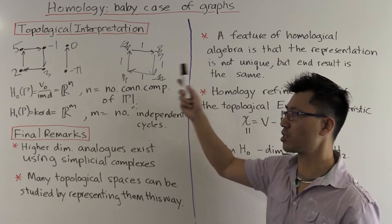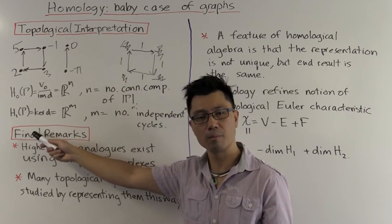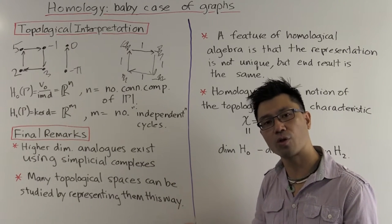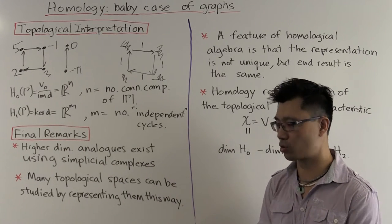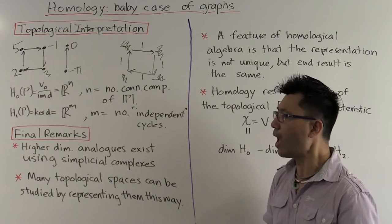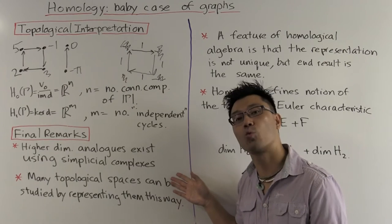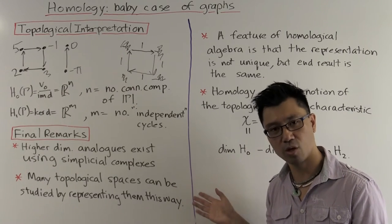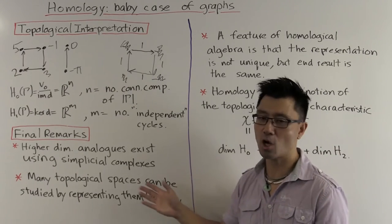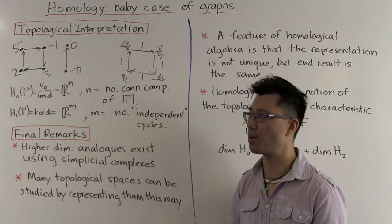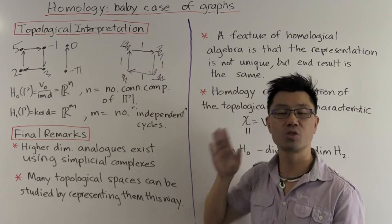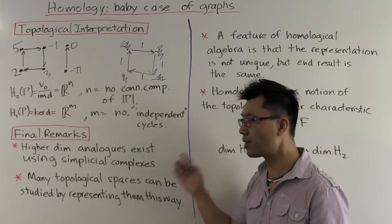And when you do that, you'll find there's not just an h0 and an h1, but an h2 and h3, and so forth, going up to the dimension of the topological space. And in fact, this procedure is a very good way to study topological spaces in general, because many topological spaces can be represented by graphs or more generally by simplicial complexes.